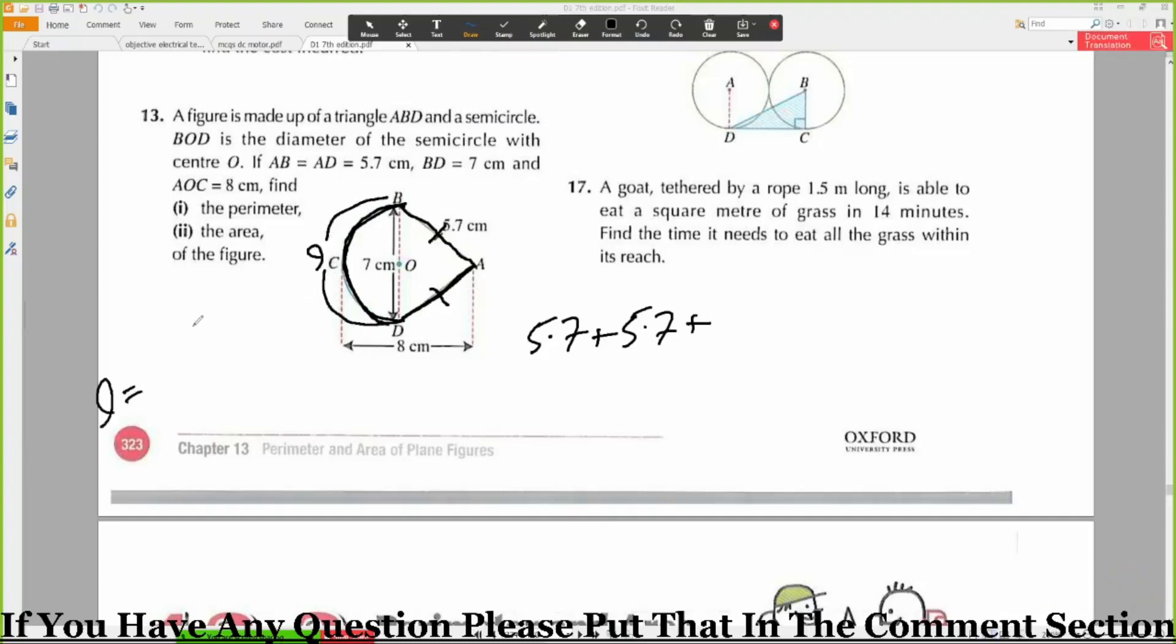So what length is given to you? πR. Yes, πR. Good. 2πR divided by 2 is equal to πR. So what is R? 3.5.